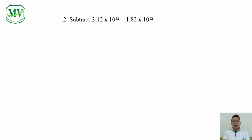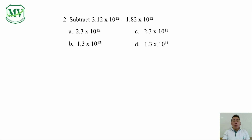Number 2. Subtract 3.12 x 10 raised to the power of 12 and 1.82 x 10 raised to the power of 12. A: 2.3 x 10 raised to the power of 12. B: 1.3 x 10 raised to the power of 12. C: 2.3 x 10 raised to the power of 11. D: 1.3 x 10 raised to the power of 11.